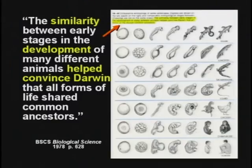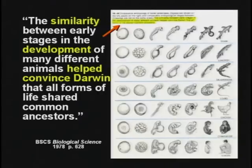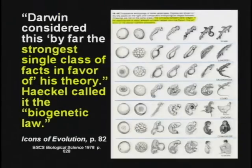This textbook says: the similarity between the early stages of development of many different animals helped convince Darwin that all forms of life shared common ancestors. Darwin considered this the strongest class of facts in favor of his theory. This was the best evidence Darwin knew of for his theory.